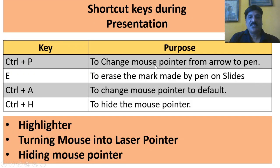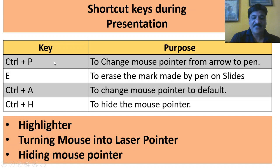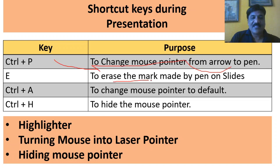In order to change the mouse pointer from arrow to pen, simply press Ctrl+P. I am pressing Ctrl+P on my keyboard and observe that the mouse pointer has been changed. You can use it for drawing or underlining certain points for that purpose.